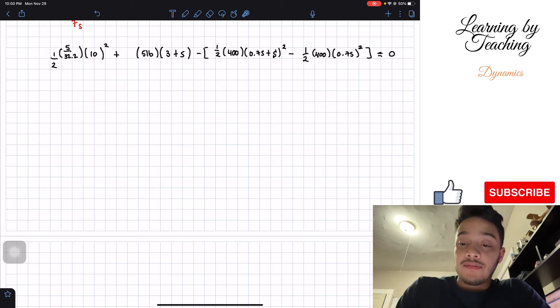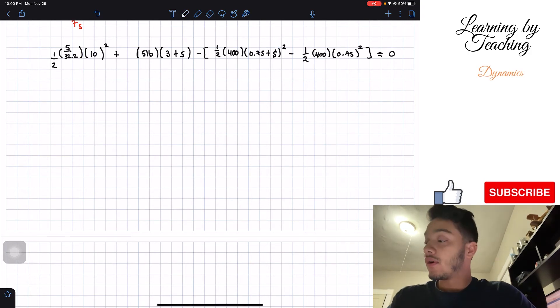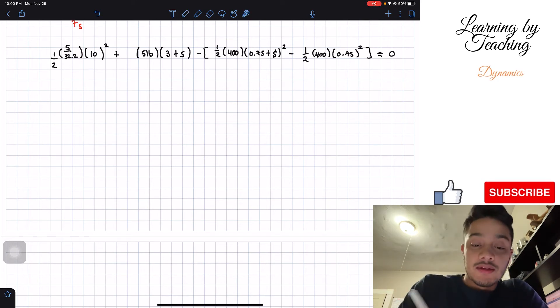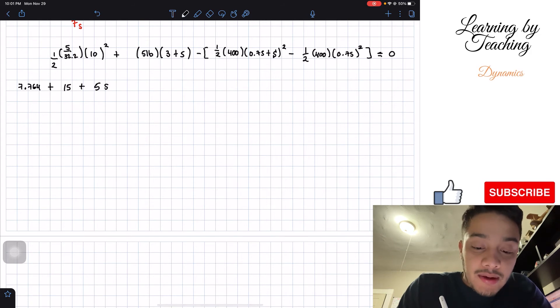Now all we have is an equation and the only unknown we have is S in here and in here, so we can try to simplify this. Let's start to simplify. This number is going to be equal to 7.764, then we're going to have plus 5 pounds multiplied by 3 will give me 15 plus 5 multiplied by S. I'm going to get an S with these little corners in here just to not confuse ourselves.